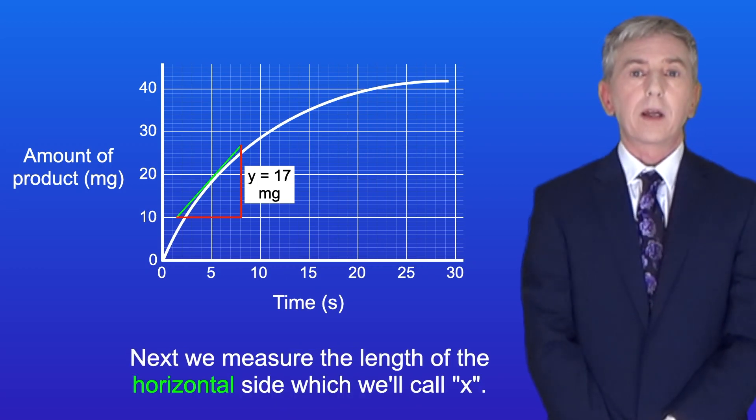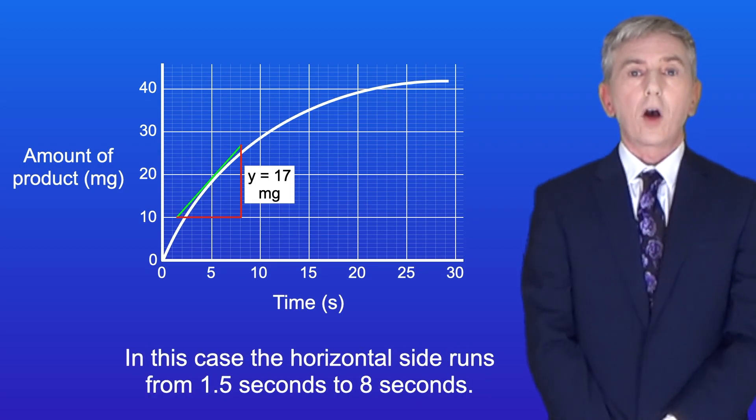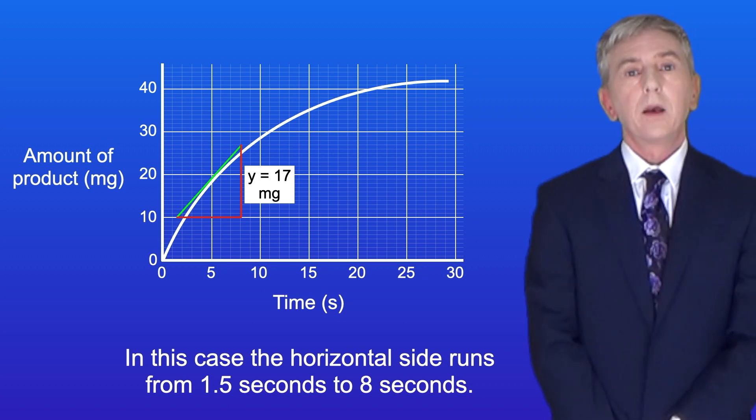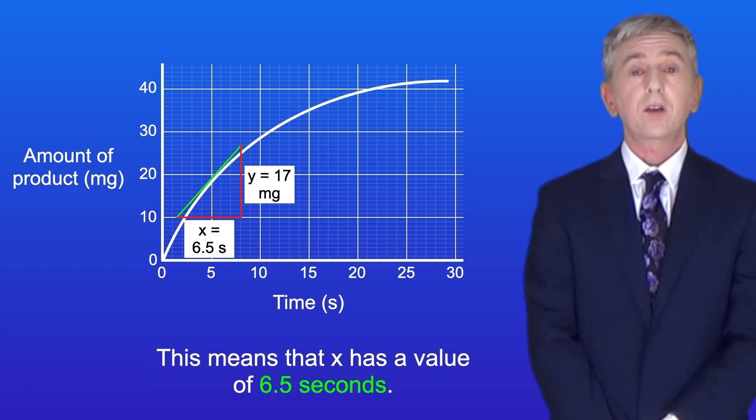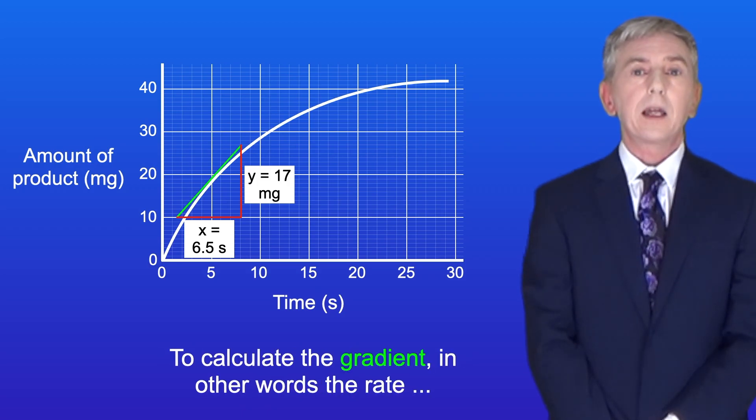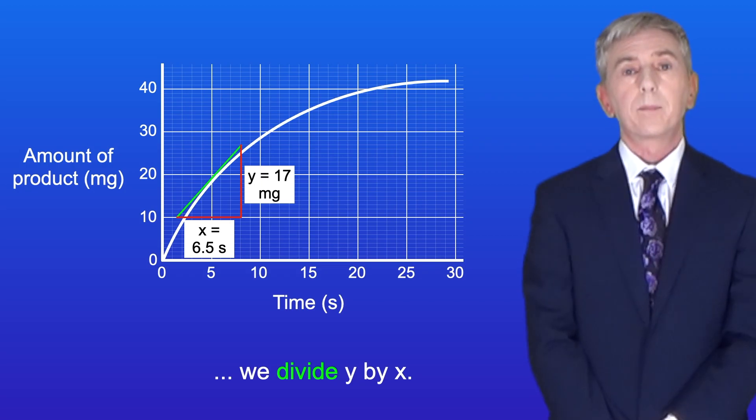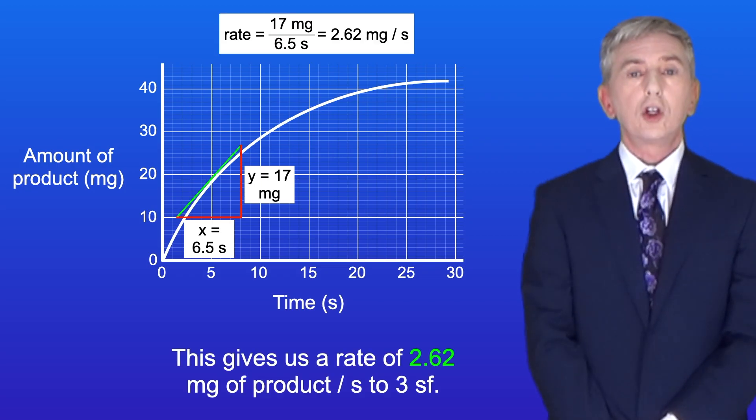Next we measure the length of the horizontal side which we'll call x. In this case the horizontal side runs from 1.5 seconds to 8 seconds. This means that x has a value of 6.5 seconds. To calculate the gradient, in other words the rate, we divide y by x. This gives us a rate of 2.62 mg of product per second to three significant figures.